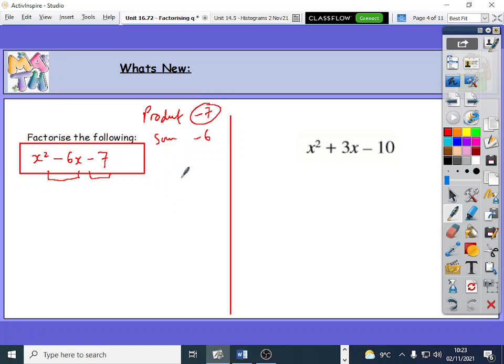Now first of all, to make minus 7, the only way you can do it because it's a prime number is 1 times 7. Now I know that to make a minus, one of these must be a positive and the other one must be a negative.